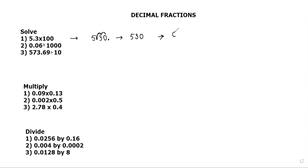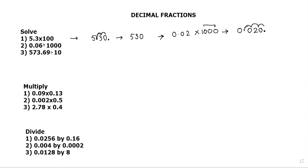Let me take one more example: 0.02 × 2000, a decimal by a whole number. Write 0.02. Now move the decimal on the right hand side. How many places? Number of zeros, which are three. So move the decimal right by three places — one, two, and three. The answer is 20. So 0.02 × 2000 is 20.